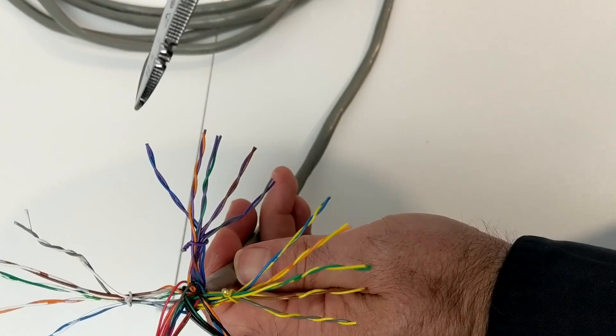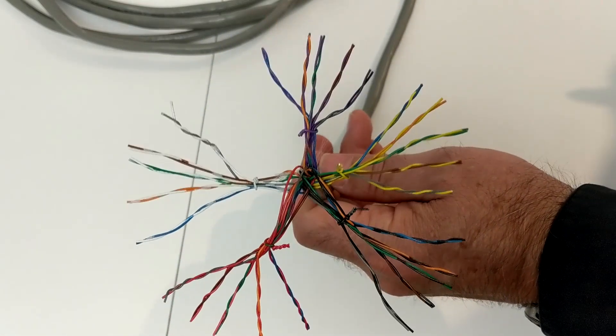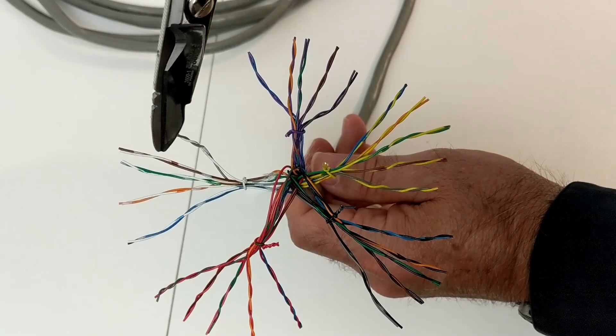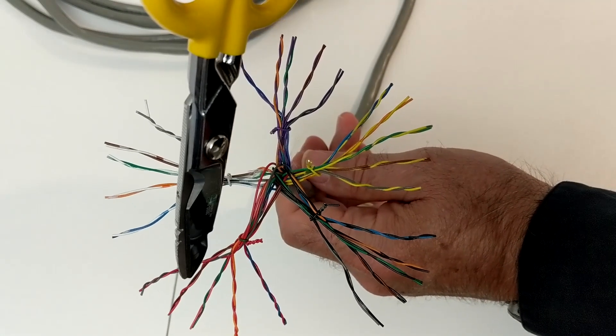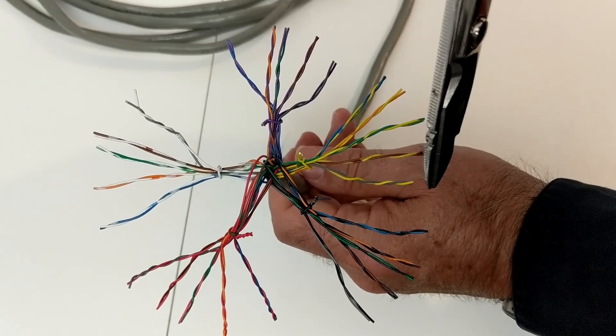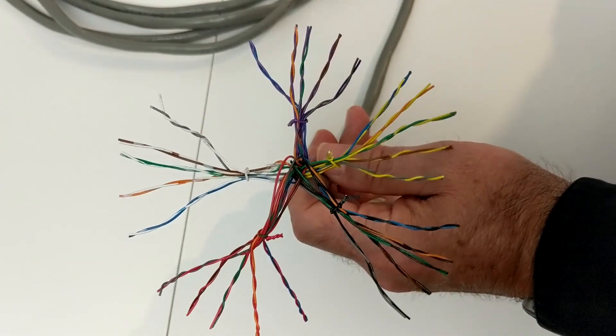So these are your pairs 1 through 25: the first 5, and then 5 through 10, 11 through 15, 16 through 20, and then 21 through 25. Now you might be thinking to yourself, okay, so what happens when you have a 50 pair or a hundred pair or 600 pair?